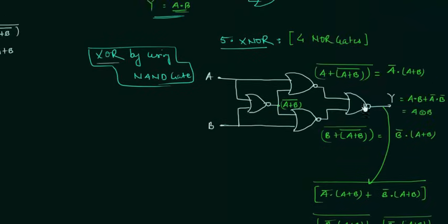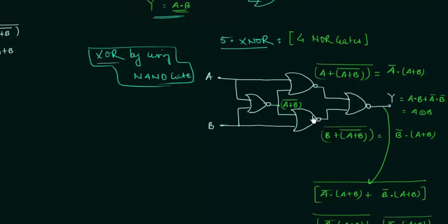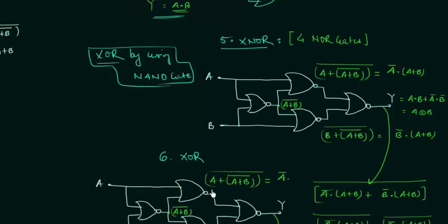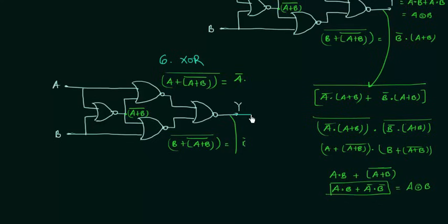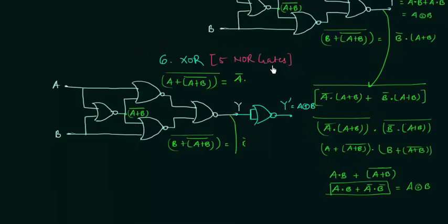This arrangement with four NOR gates works as an XNOR gate. If you want to implement the XOR gate using NOR gates, you complement the output of this XNOR arrangement using one more NOR gate with common inputs. So by using five NOR gates we can implement the XOR gate.